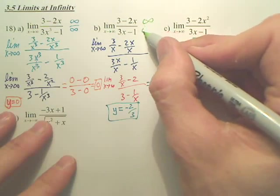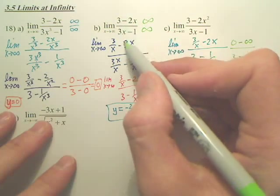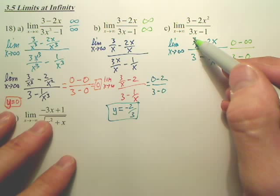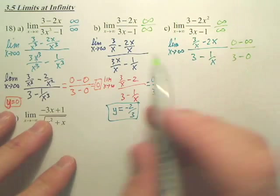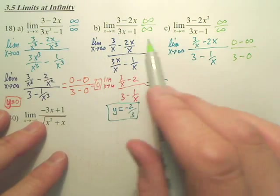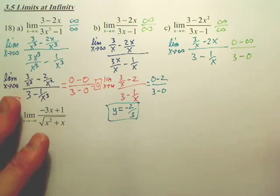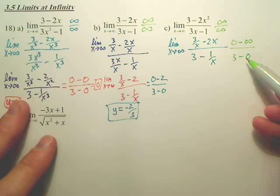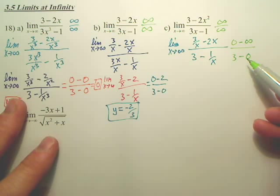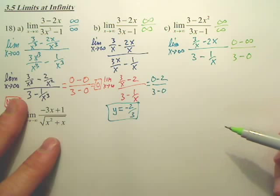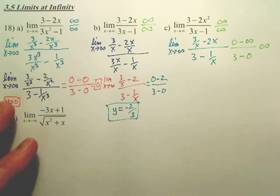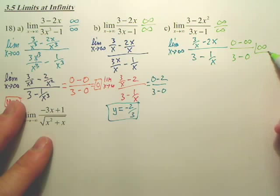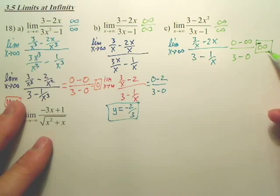By the way, this last one was infinity over infinity to begin with — you're supposed to check that first. Just make sure it's infinity over infinity. Now, after dividing, is this still infinity over infinity? No. So what's the answer? It's just infinity — infinity over 3 — and isn't it negative? Yes, very good. It's negative infinity.